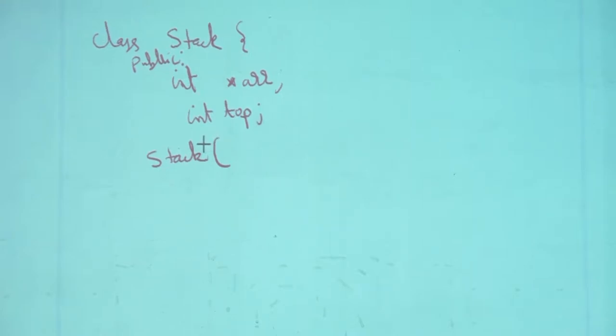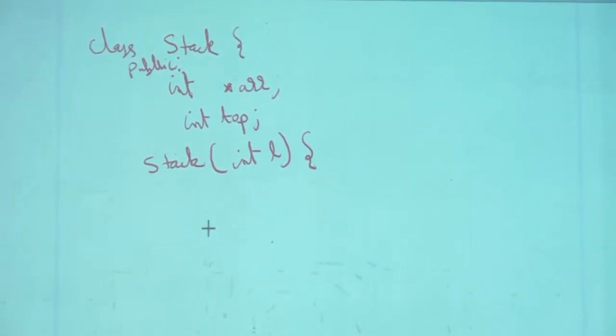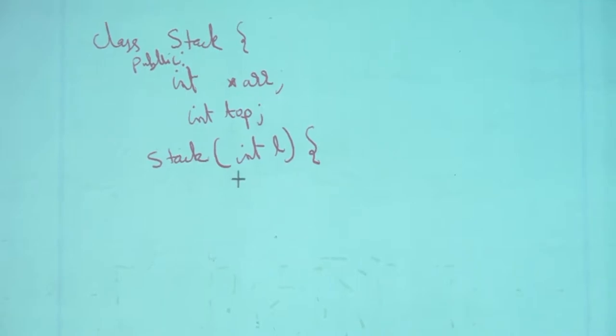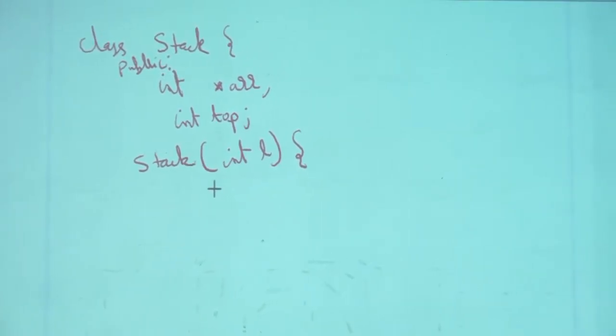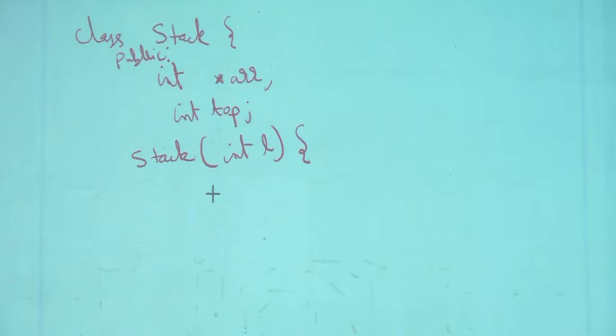We have a constructor here. The stack constructor can take a parameter L giving the size of the potential stack — an estimate of the length. The constructor takes an estimate of how many elements are going to be pushed into the stack without being popped, which gives us how many elements we need to hold in the array.